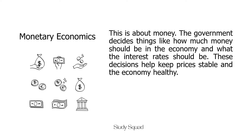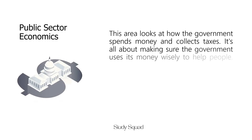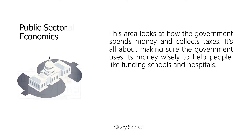First up, monetary economics. This is about money. The government decides things like how much money should be in the economy and what the interest rates should be. These decisions help keep prices stable and the economy healthy. Next, we have public sector economics. This area looks at how the government spends money and collects taxes. It's all about making sure the government uses its money wisely to help people, like funding schools and hospitals.